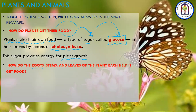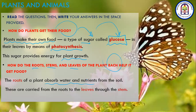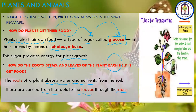How do the roots, stems, and leaves of the plant each help it get food? The roots of a plant absorb water and nutrients from the soil. These water and nutrients are carried from the roots to the leaves through the stem — so from roots, to stem, to leaves. Then photosynthesis takes place. Then the food is transferred to other parts of the plant, up and down.